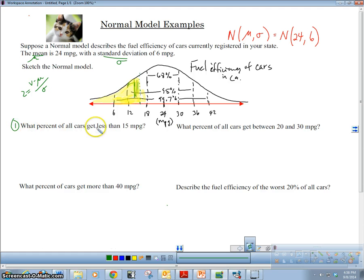So number one: What percent of all cars get less than 15 mpg? Remember that's the percent of the population. We're going to use the normal model to figure this out. So 15 mpg is about right here, somewhere around here. From here we want everything less than, that's all this part right here. We want all this shaded area. So we're going to find a z-score.